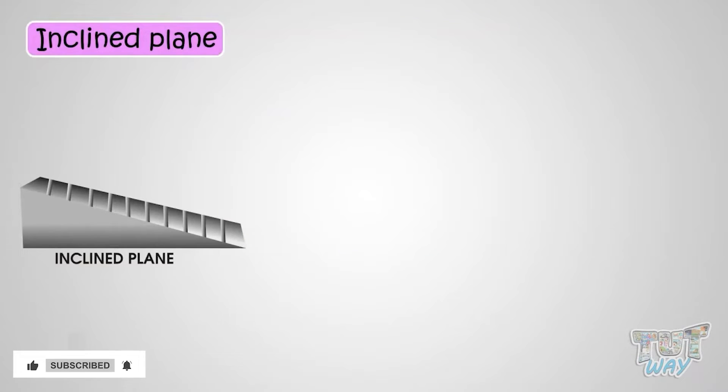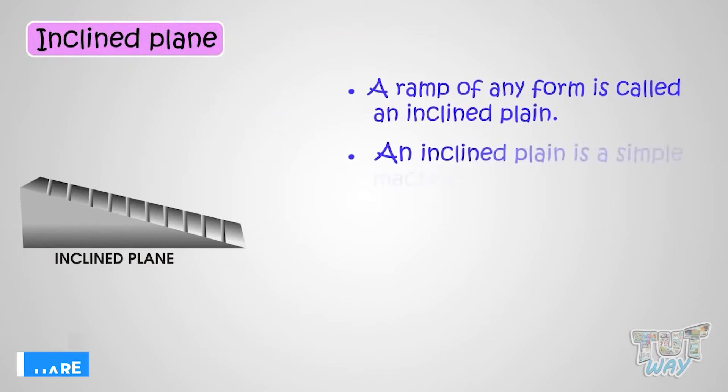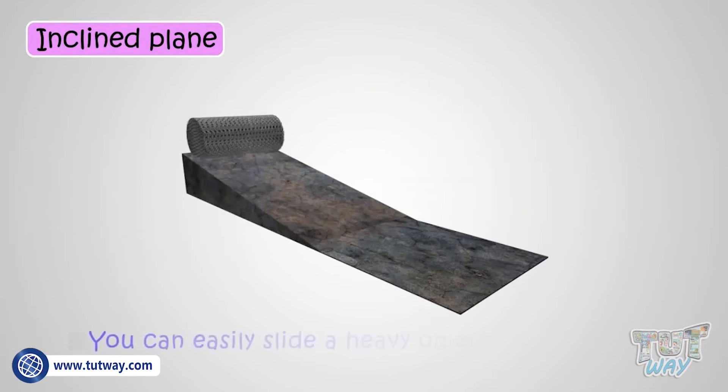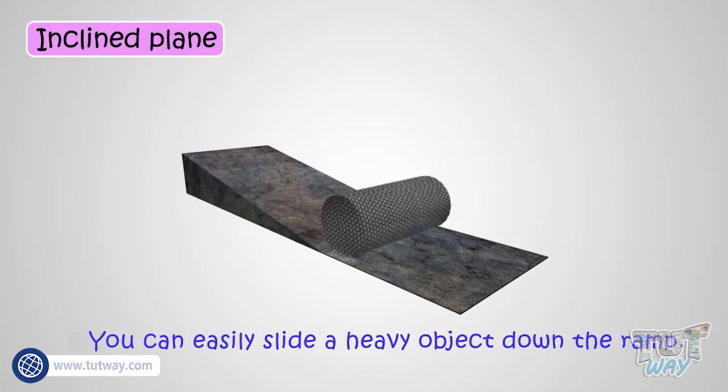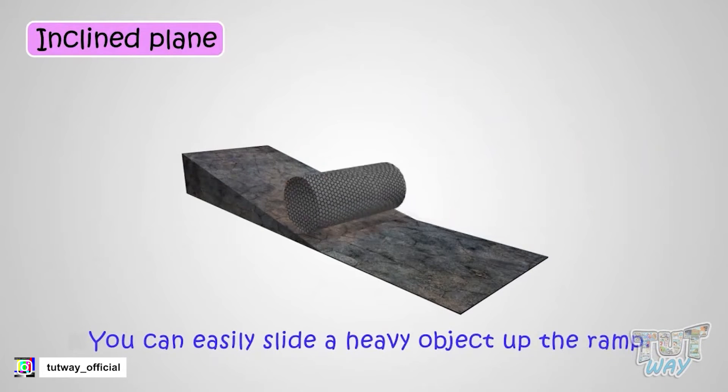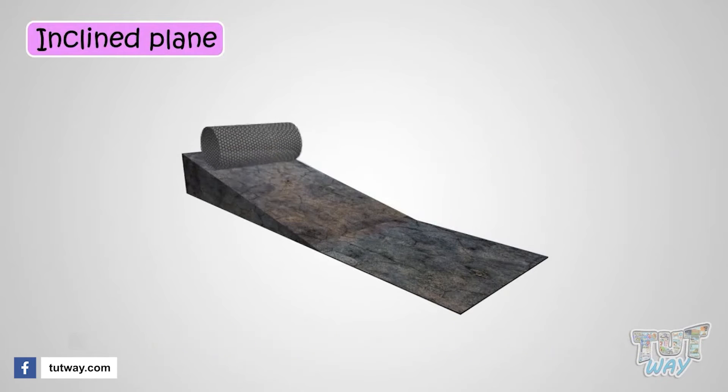Inclined plane. A ramp of any form is the simplest machine and it makes moving up or down any object easier. So you can slide down the ramp any heavy object or slide up the ramp any heavy object. So a ramp or an inclined plane makes your work easier.